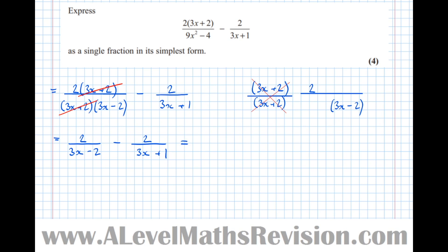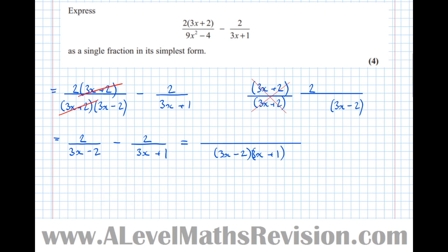Let's find a common denominator for these fractions, because to subtract fractions you need a common denominator. In this case the common denominator is found by multiplying both denominators together: (3x minus 2)(3x plus 1). For the first fraction, we times the bottom by (3x plus 1), so to keep the fraction equivalent we must times the top by (3x plus 1) as well — much like with numerical fractions, if you times the top by 2 you must times the bottom by 2. So I've multiplied the denominator by (3x plus 1), so I need to times the numerator by (3x plus 1) as well.